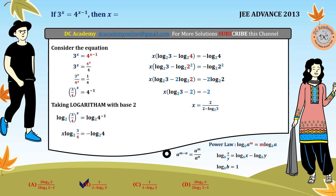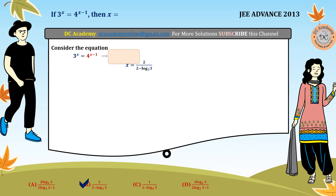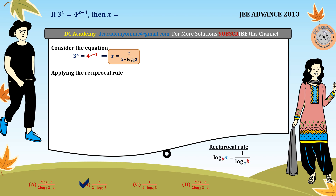Since the problem may have multiple correct options, we test the others. We already confirmed option B. Now we apply the reciprocal rule for logarithms: log base b of a equals 1 divided by log base a of b — the base and argument interchange. Therefore, log base 2 of 3 is equivalent to 1 divided by log base 3 of 2.